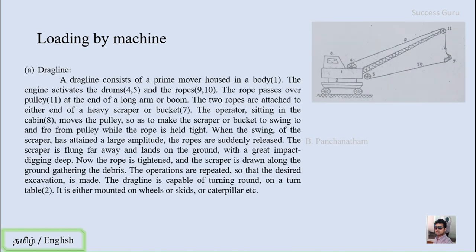For loading by machine we have many machines. The first one is the drag line. A drag line consists of a prime mover housed in a body, and the engine activates drums 4 and 5. These are the two drums which can be activated by the engine, so when it rotates the rope will move front and back. By this, ropes 9 and 10 are also activated.